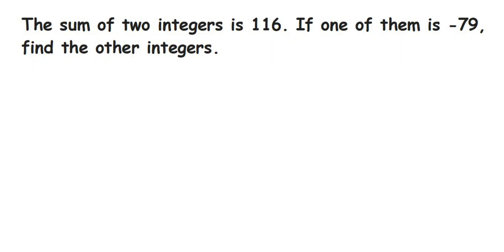Hey everyone, here is a question from integers. The question is: the sum of two integers is 116. If one of them is -79, find the other integer.